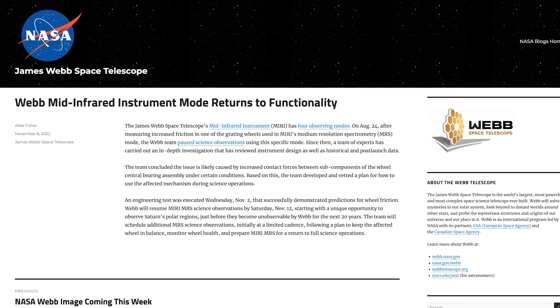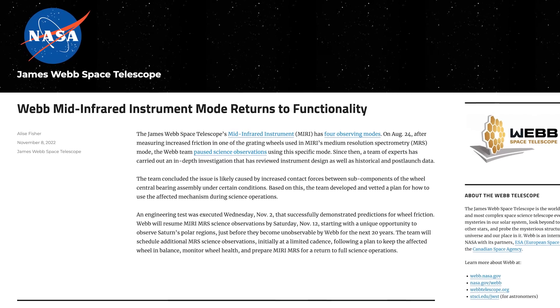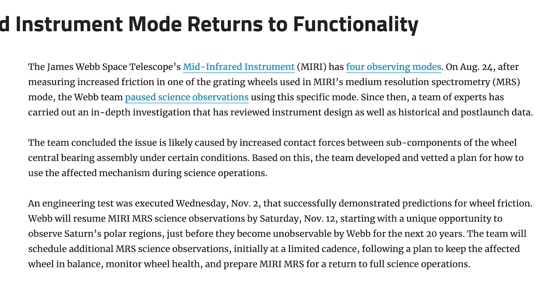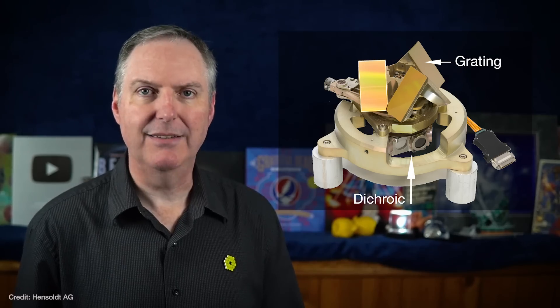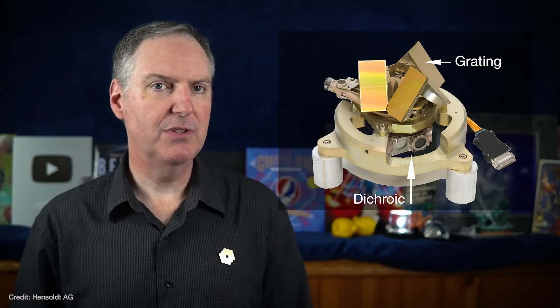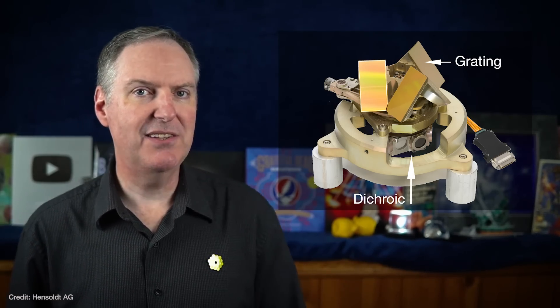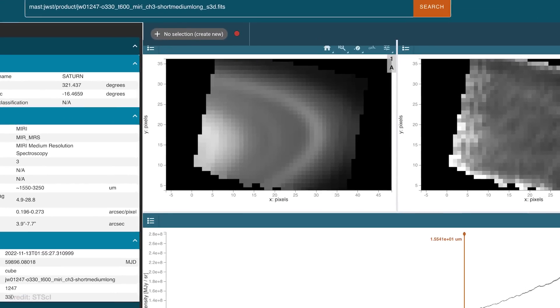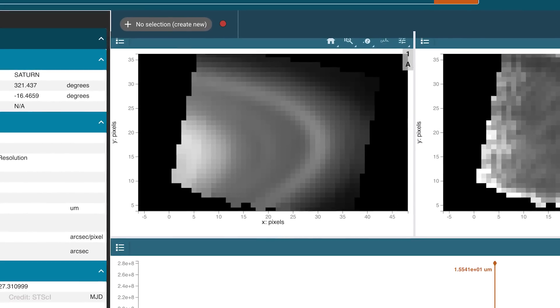On November 8, NASA announced that the friction problem was resolved, and MRS was returned to full service. The official statement said that a review concluded that the friction occurred under certain conditions, and that the team developed a new procedure for using the wheel during science operations. The new procedure was tested on November 2, and the wheel performed exactly as predicted. MRS mode was returned to full science observations ten days later, and it's been running ever since. In fact, the first spectrum that MRS took was of Saturn's polar regions.